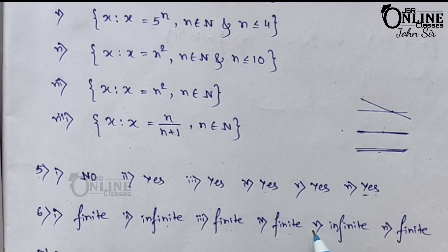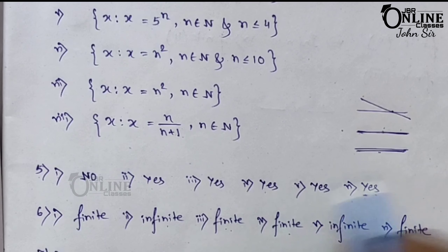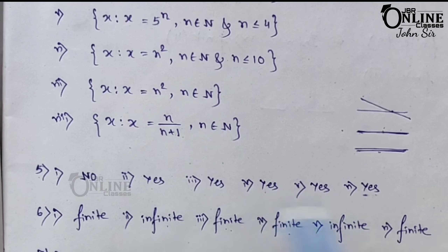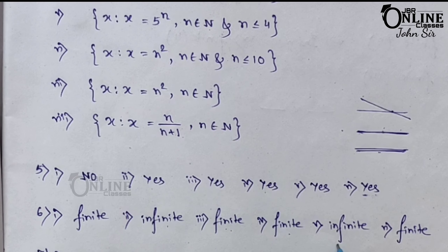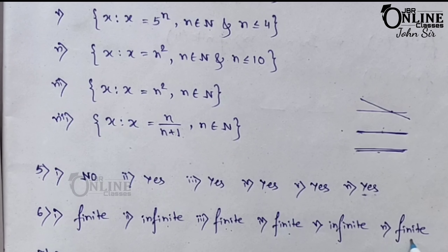The set of circles drawn in a plane — it's infinite. You can draw as many circles as you want, with no fixed limit. And the last one: the set of prime numbers less than one crore — definitely it's a finite set.